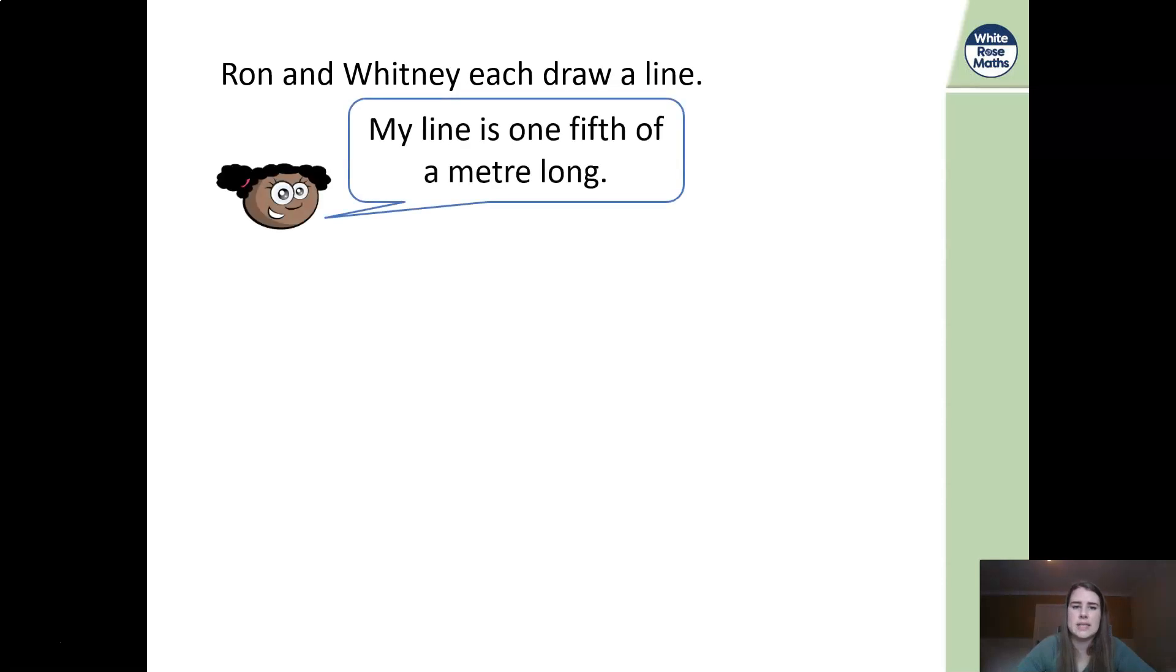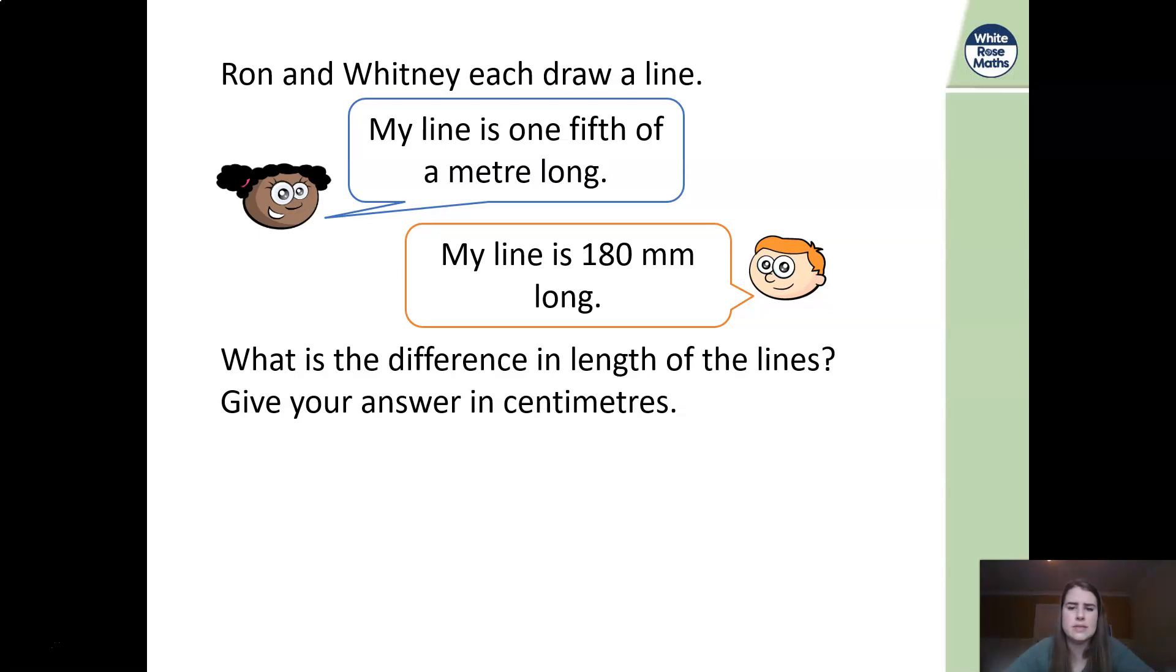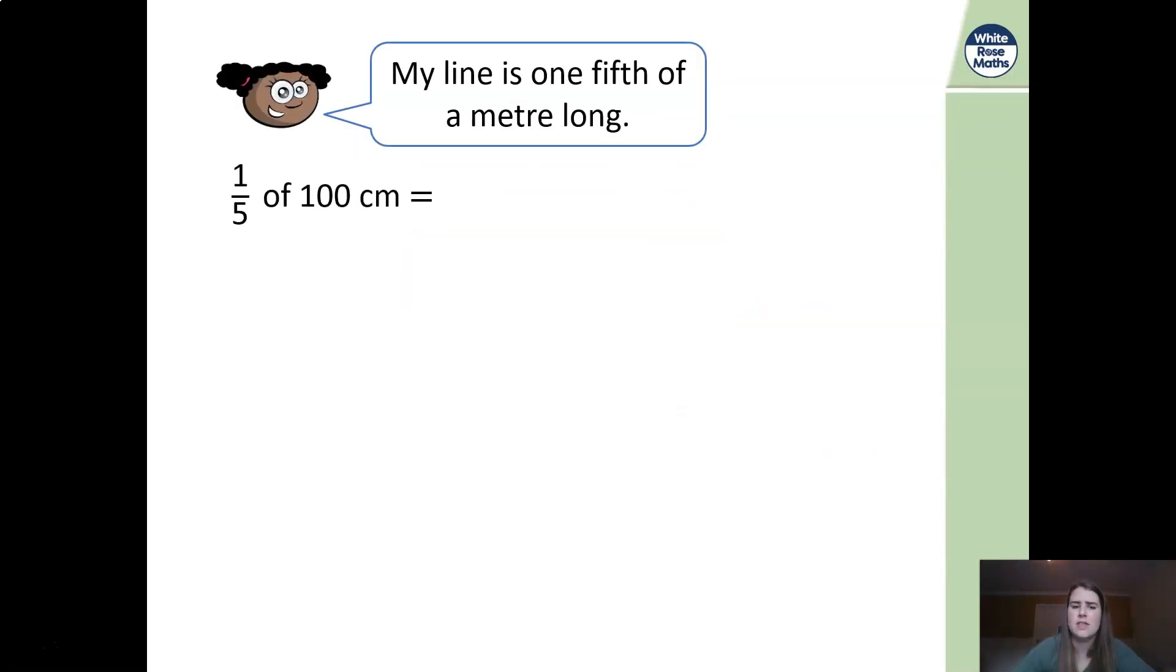Let's put it into a problem-solving context. Ron and Whitney have each drawn a line and Whitney says, my line is 1 fifth of a metre long. And Ron says, my line is 180 millimetres long. We need to work out what the difference is between those lines and I want you to give the answer in centimetres. So I need to think to myself, I know that his is 180 millimetres long. Do we know how long Whitney's is? No. He says my line is 1 fifth of a metre long. So I know the measurement I've got there is metres. I know 1 metre is 100 centimetres. And Whitney says, mine is 1 fifth. Going back to the fractions question at the beginning, how do I work that out? Correct. I'm going to find a fifth of 100. A fifth of 100, we know is 100 divided by 5, good, multiplied by 1, which is 20 centimetres.